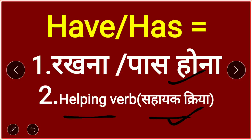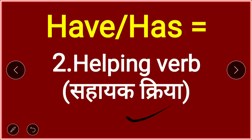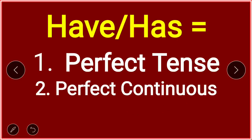When have or has is used as a helping verb (auxiliary verb), it will be used in two places: first, with perfect tense; second, with perfect continuous tense. Within perfect tense there will also be two uses — one with present perfect tense and one with future perfect tense. Past perfect tense never uses have or has.